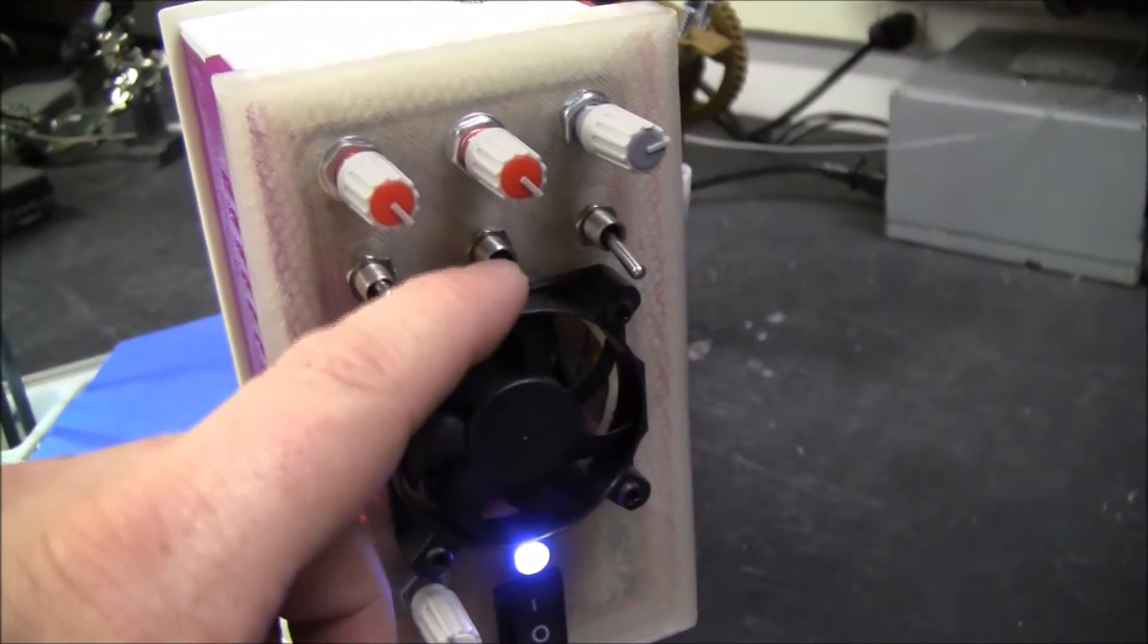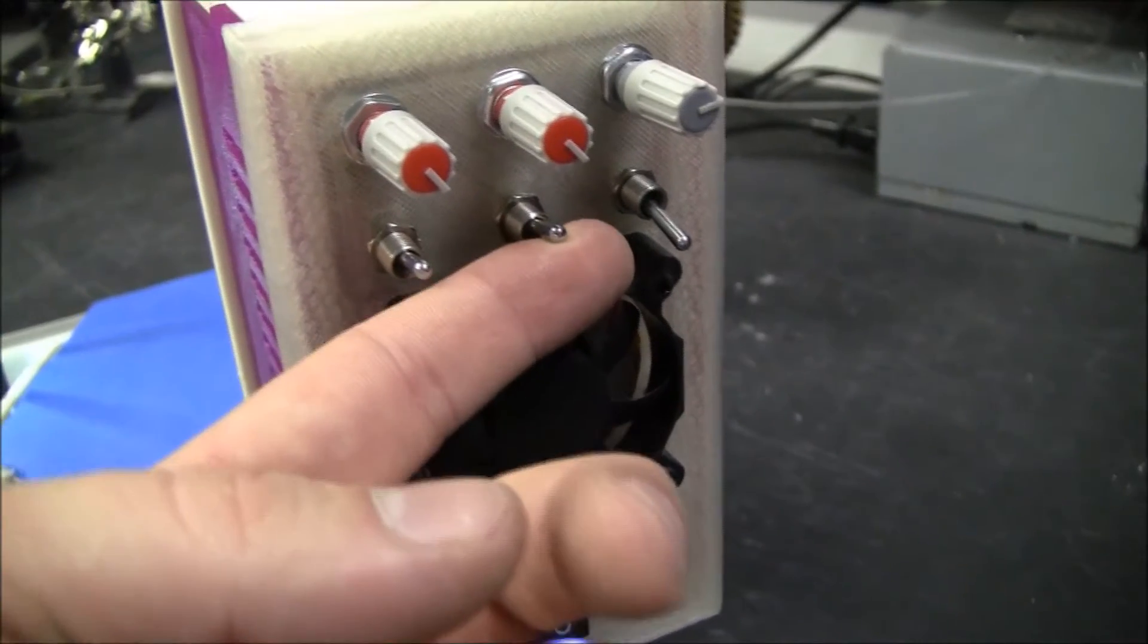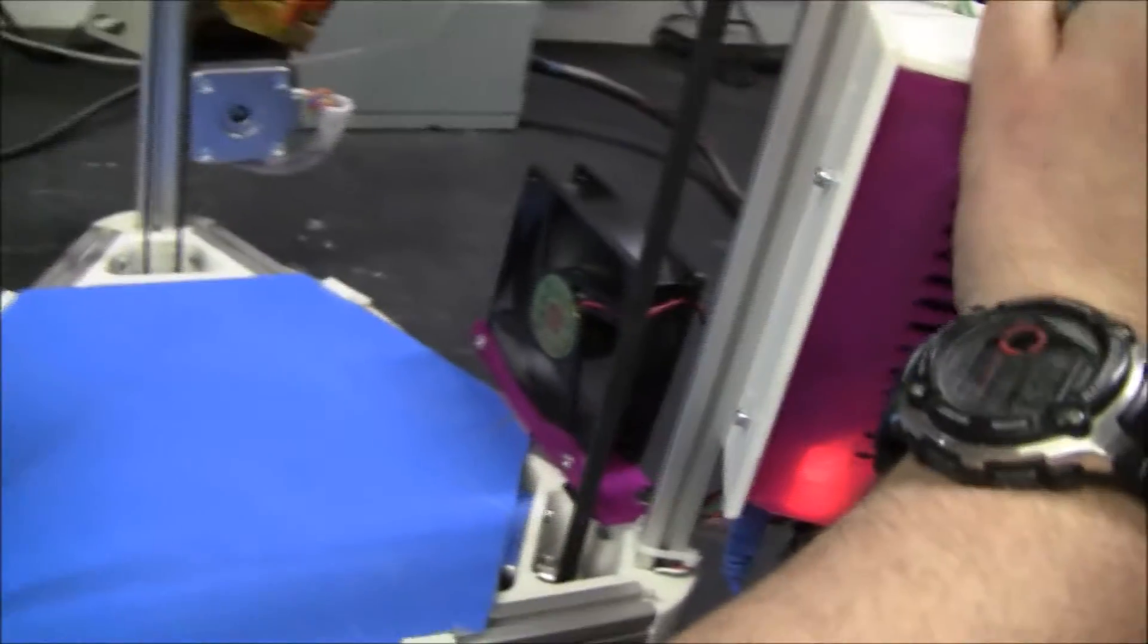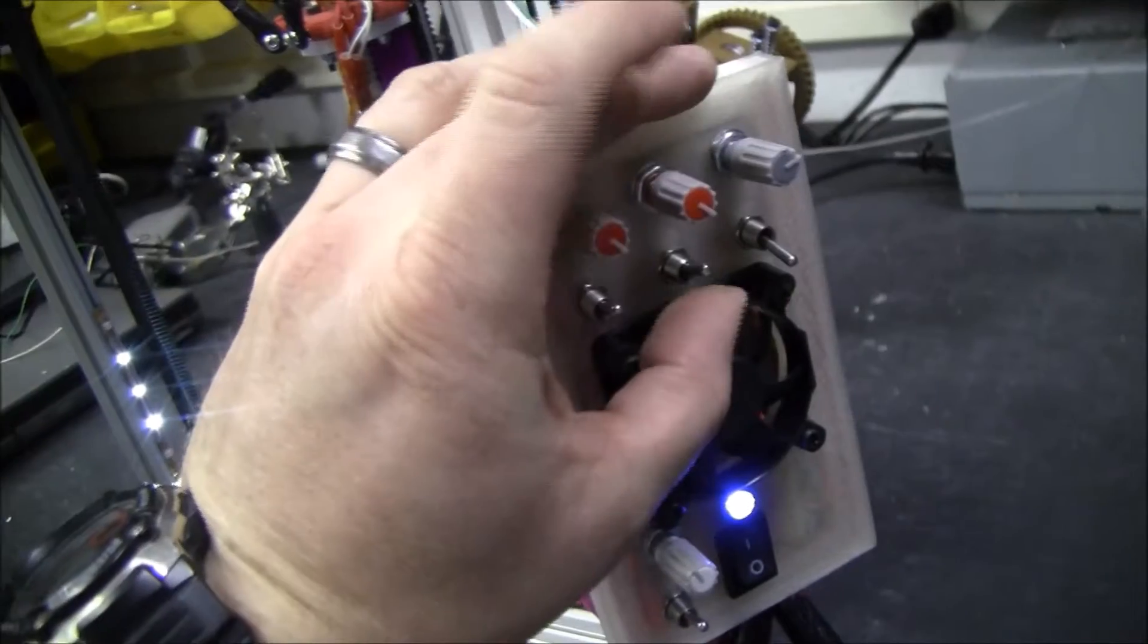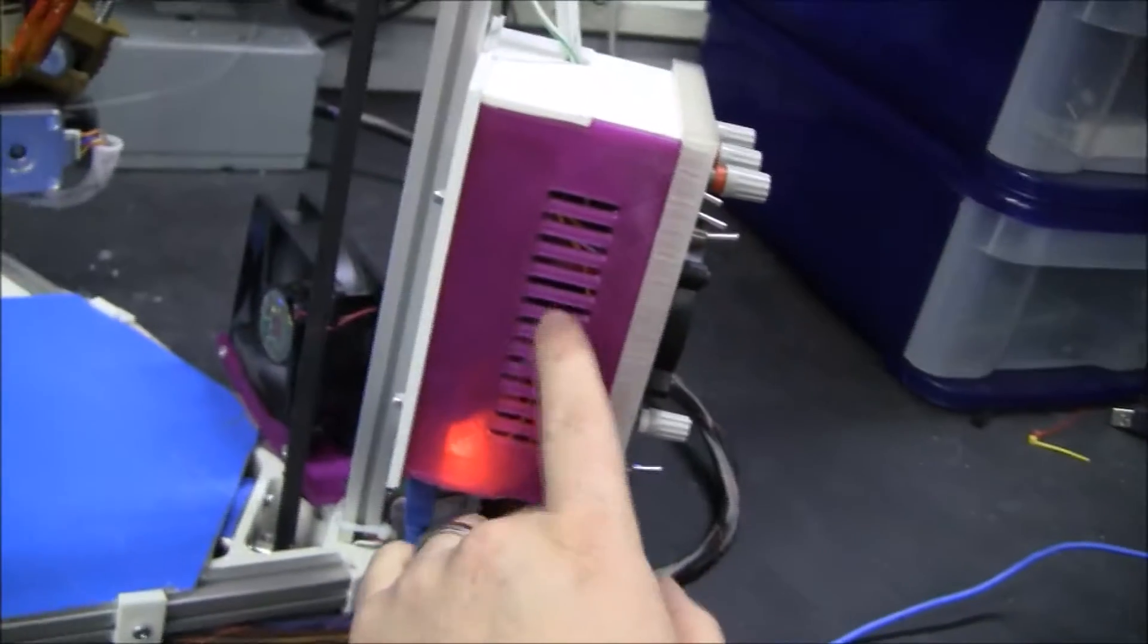This is actually a three-way switch, so if I go up it's actually just always on, and then of course I can adjust the speed here. And then if it's in the middle it's off, and then if it's down it's in auto, and that means it's going to be controlled by the ramps board.